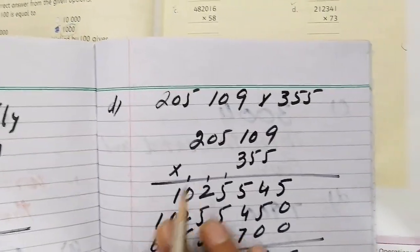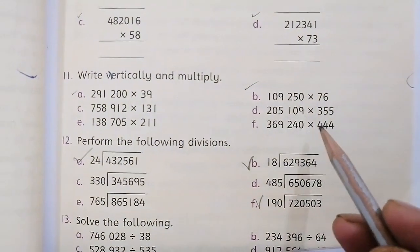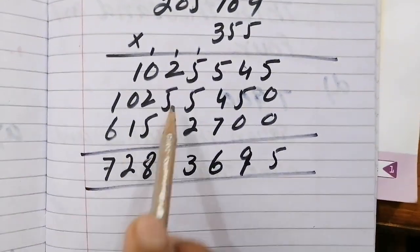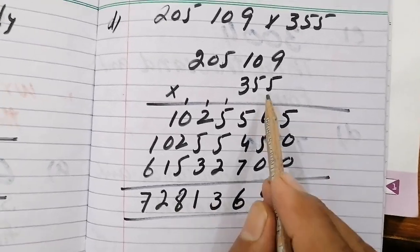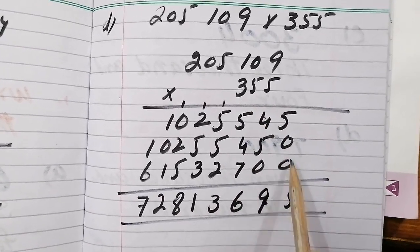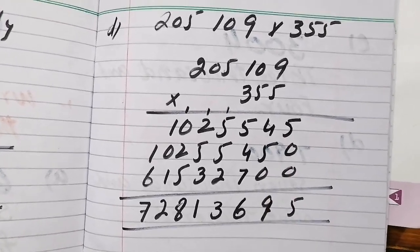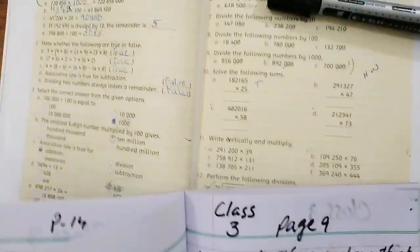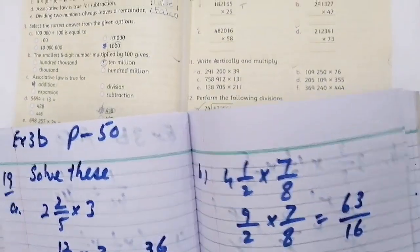Similarly, the division component here is part D: 109 multiplied by 355, using the unit and 100 place. Here we have the 100 place. Okay, so this way, next question.